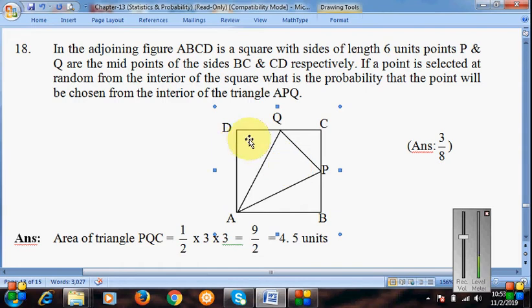They have given us a square. We can choose a point from anywhere in this square. That point can come from here, that point can come from here, that point can come from here. It means we can say that...